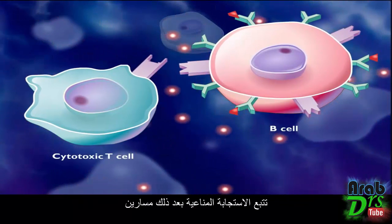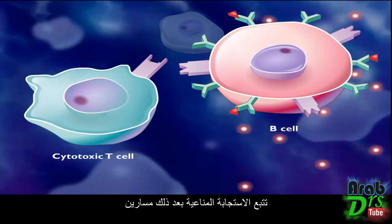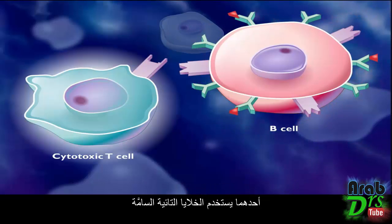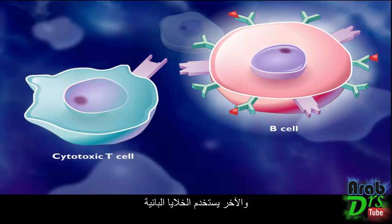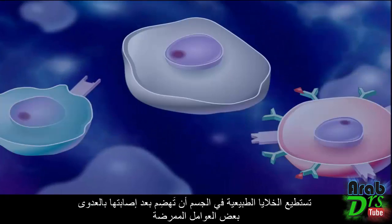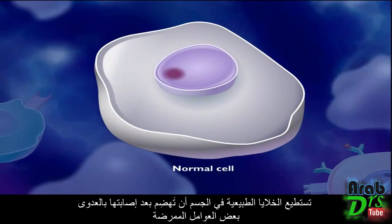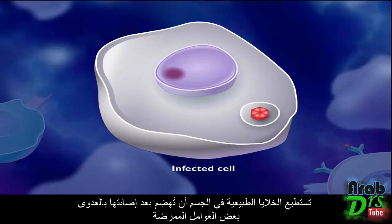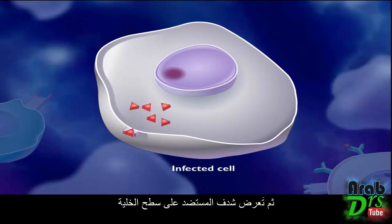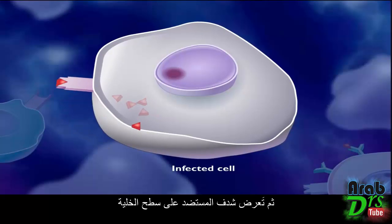The immune response from this point follows two paths: one using cytotoxic T-cells and one using B-cells. Normal cells of the body that become infected can also digest some of the pathogens and display antigen fragments on their cell surfaces.